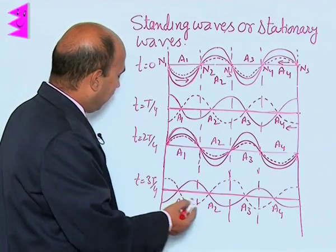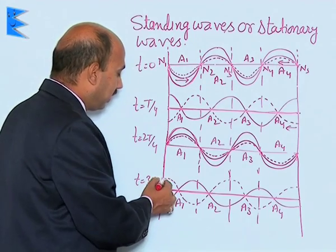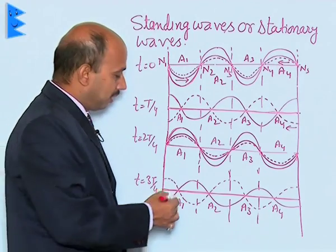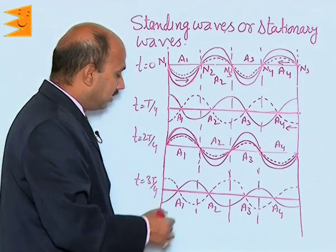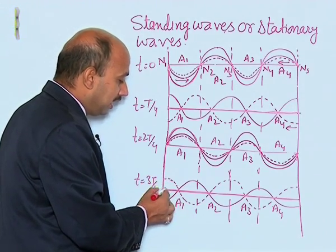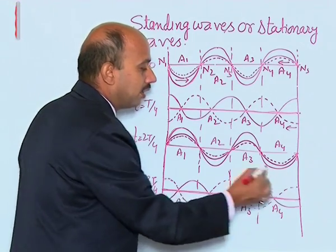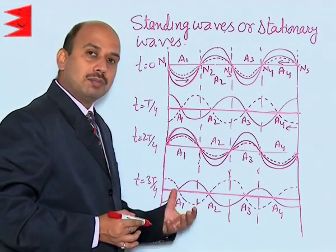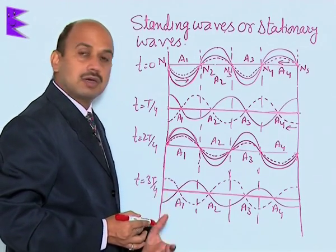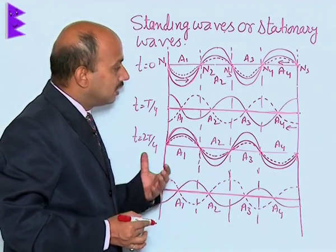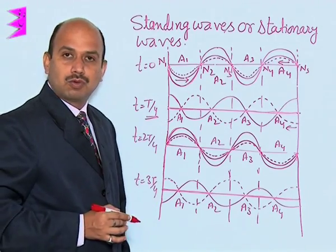At t = 3T/4, the distance traveled is 3λ/4. In this case, the net displacement is again 0, shown by the thick line. All the particles of the medium are at the mean position, similar to the condition at t = T/4 but opposite to it.